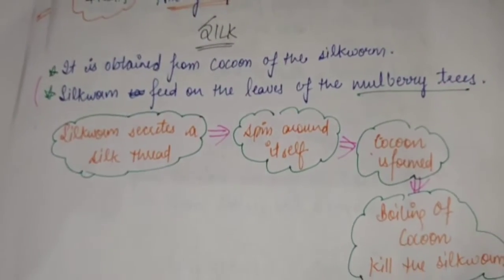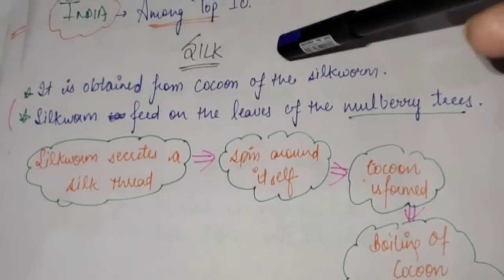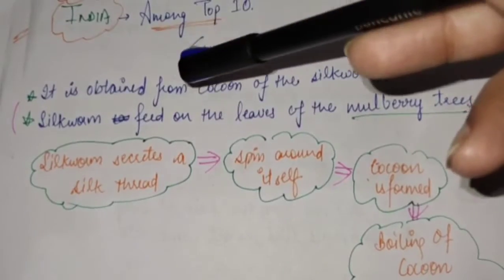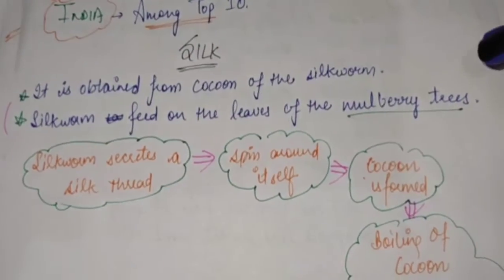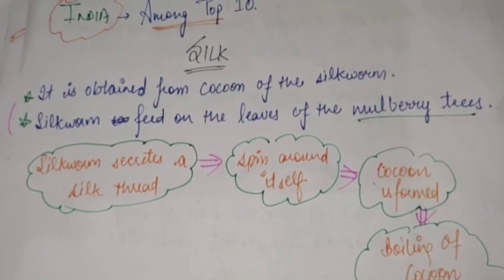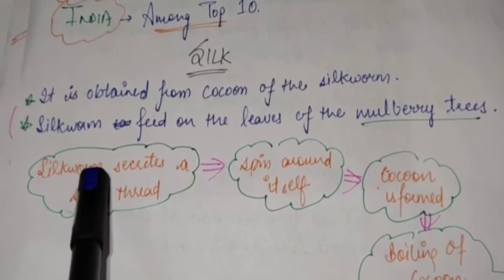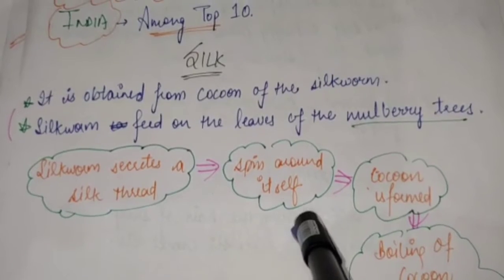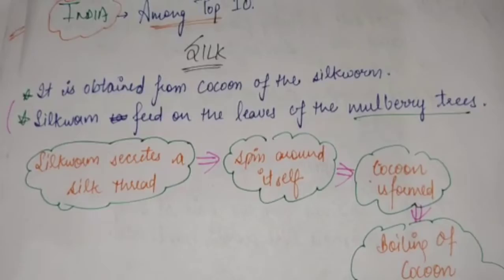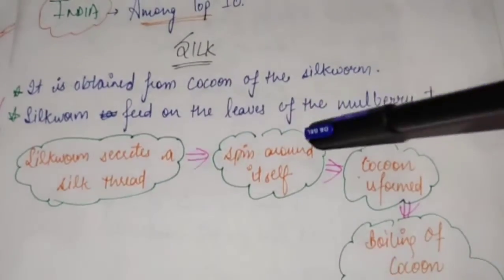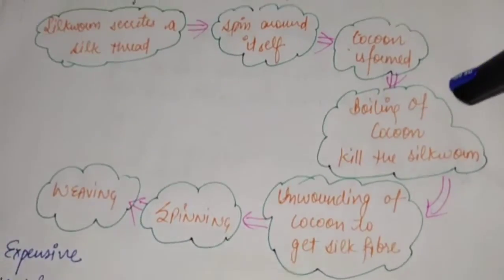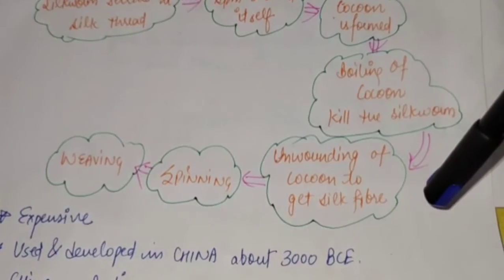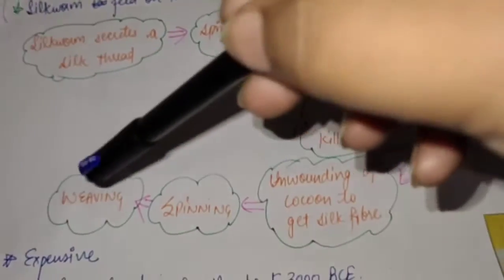Now let us look at silk fiber. Silk is obtained from the cocoon of a silkworm. The silkworm feeds on the leaves of the mulberry tree. After about 15 to 20 days, the silkworm starts secreting silk thread and spins the thread around itself. This thread can be as long as one kilometer, and when the worm spins the thread around itself it forms a cocoon. The cocoon is then collected and boiled, which kills the silkworm, and after that the cocoon unwinds to give the silk fiber.